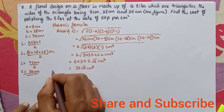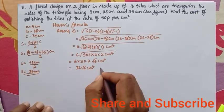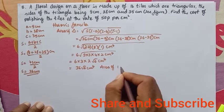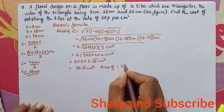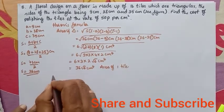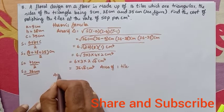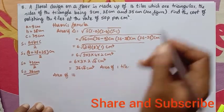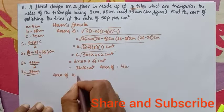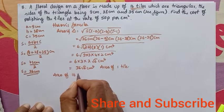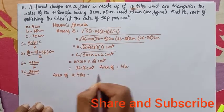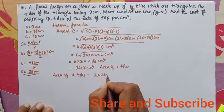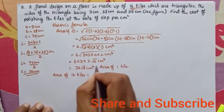So the area of one tile is 36√6 cm². Now, the area of 16 tiles = 16 × 36√6 cm².